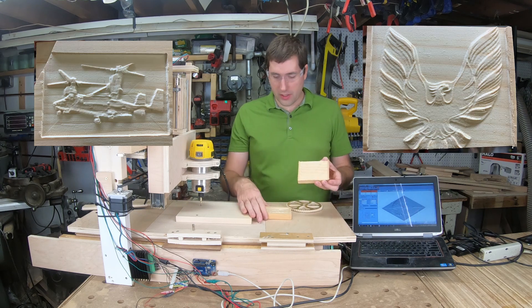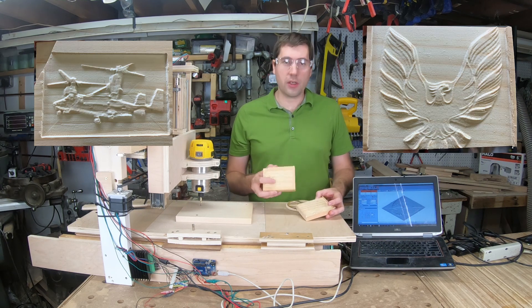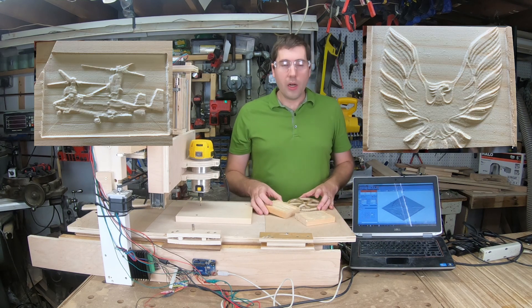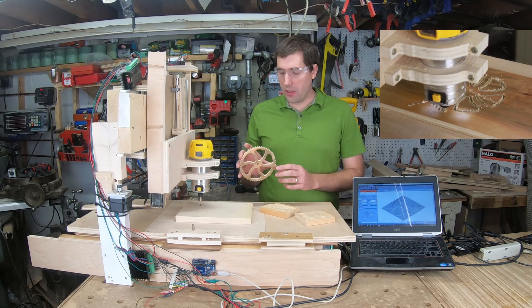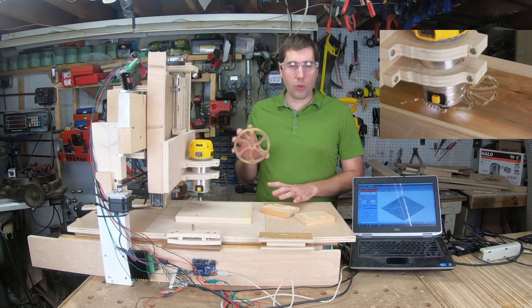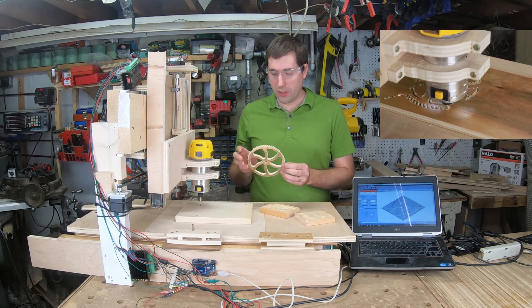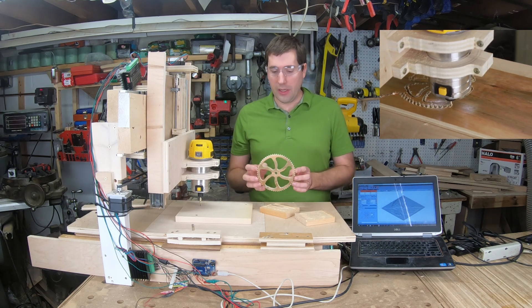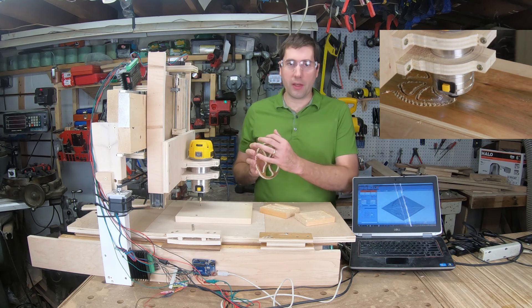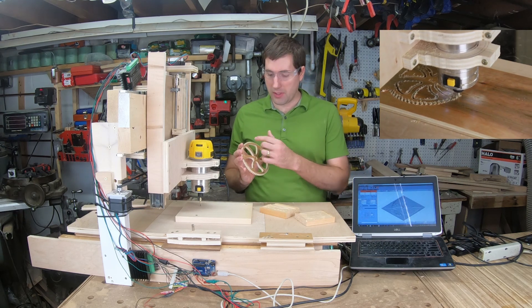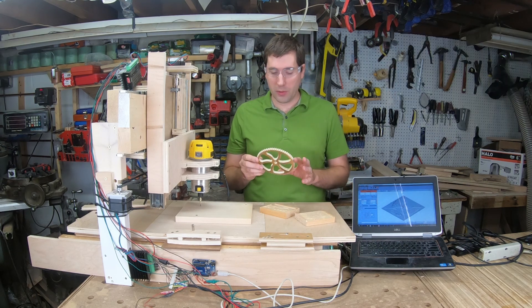I built this router mostly to do little carvings like this Eagle here and this V22 Osprey here, but I also wanted to see if I could use it to make some of these gears here. This is just a coarse trial here, so it's pretty rough around the edges. I ran it very quickly. It only took about three or four minutes to cut this gear out, and it seems to have worked pretty well. I think if I had slowed down the feed rate and used something besides some pre-finished plywood, I think this would have worked really well.